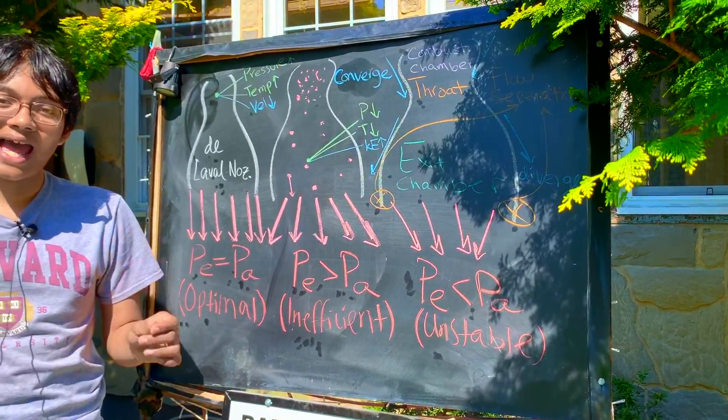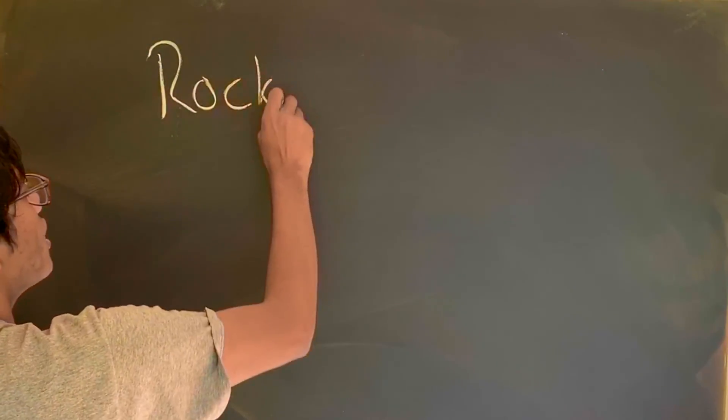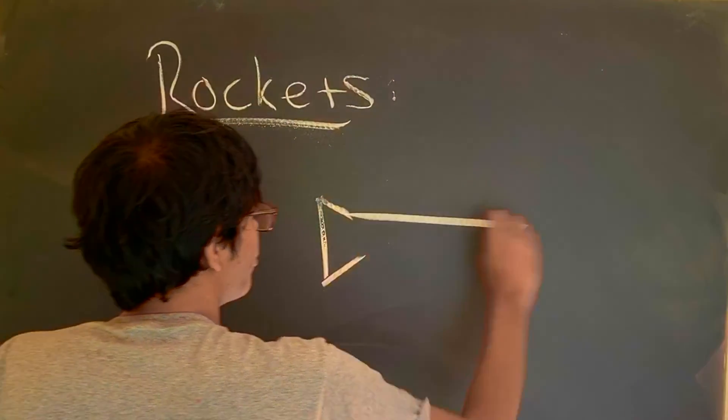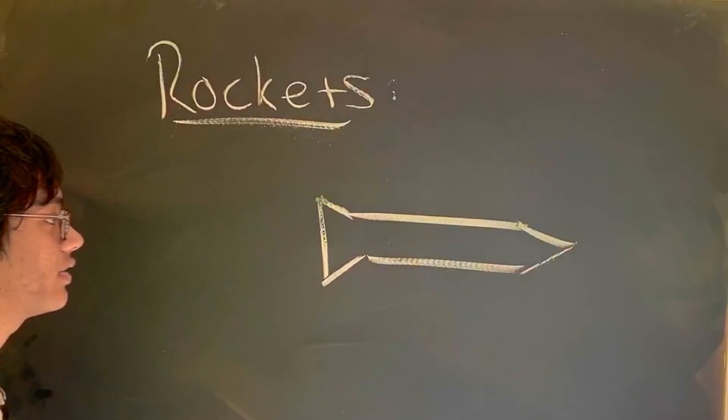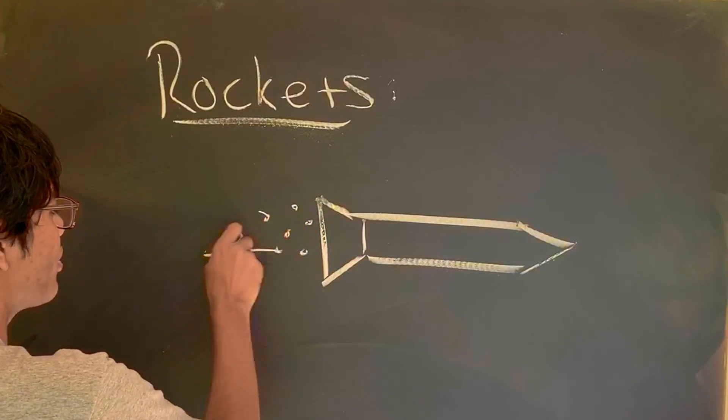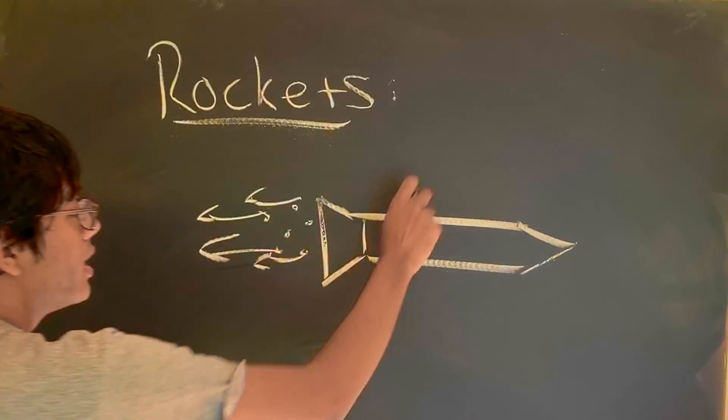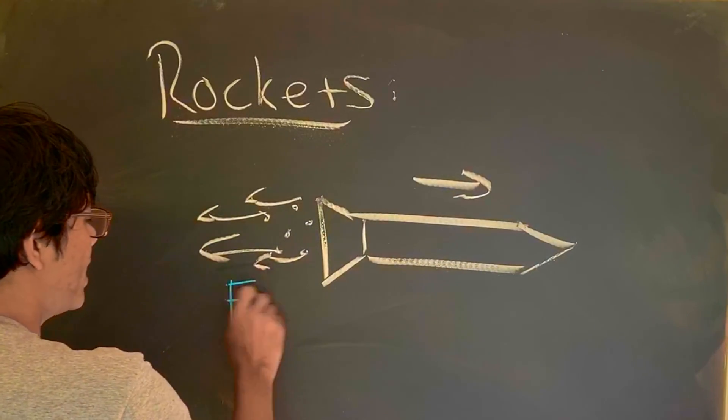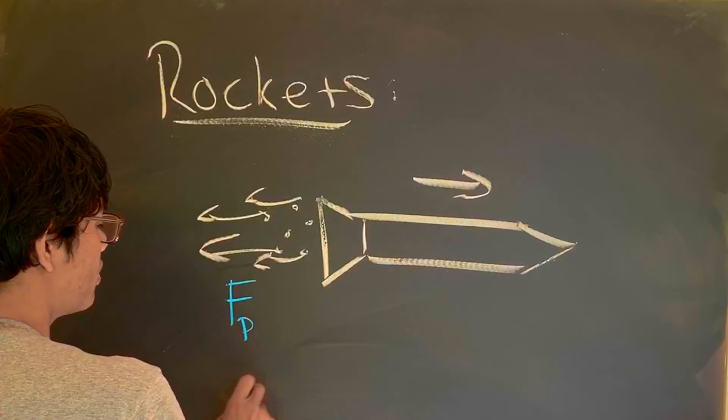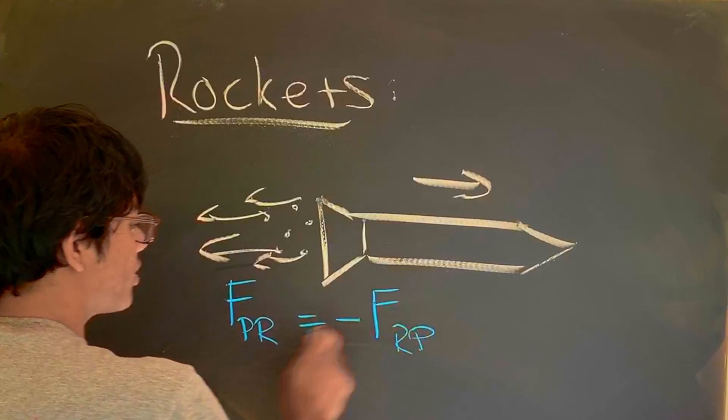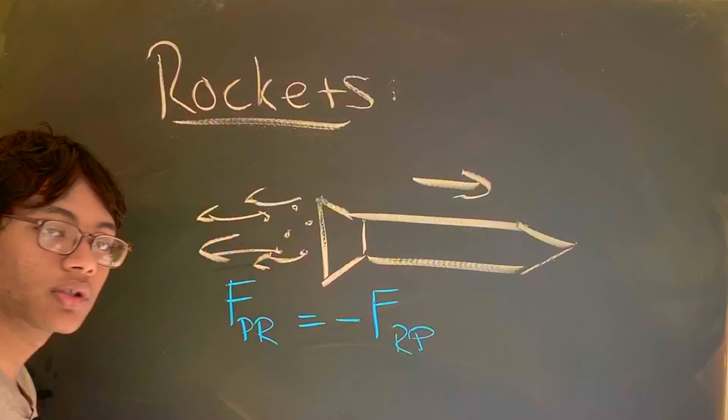Now let's check out how the rocket actually works at the blackboard. Rockets function on the conservation of momentum. If you've got a rocket that's propelling itself like this, it's going to eject a lot of particles of gas out its back. And as the gas is moved backward, the rocket is going to propel itself forward. In fact, we have an equation just to describe that. The force of the particles on the rocket is equal to minus the force of the rocket on the particles. And so the rocket will go right, the particles will go left.